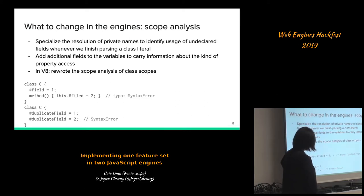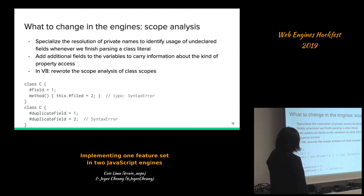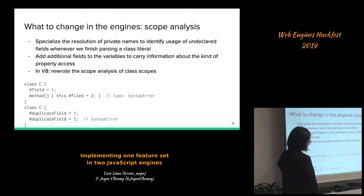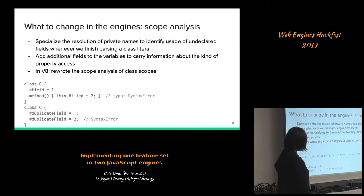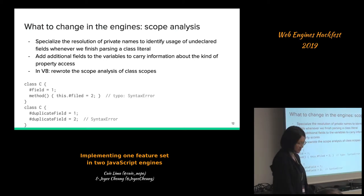To implement this we need to add additional fields to variables to carry information about the kind of property access — for instance, recording that this is a private property access. In V8 we need to rewrite the scope analysis for class scopes, which were previously implemented the same way as normal block scopes. Also, with private names, duplicate fields now throw a syntax error, which is also identified during scope analysis.